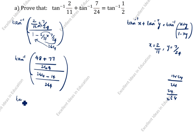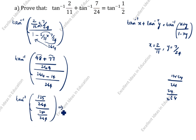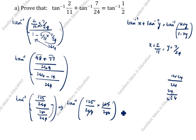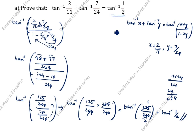After that, tan inverse of 48 plus 77 is 125, divided by 264 minus 14 is 250. So tan inverse of 125 divided by 250, and the 264 cancels, giving tan inverse of 1 by 2. You see, tan inverse of 1 by 2 — LHS equals RHS. Hence proved.